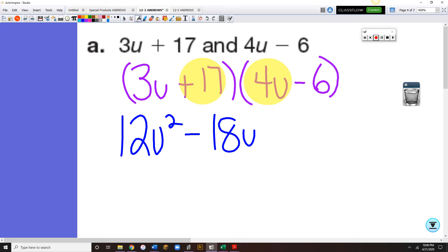Now I'm going to double distribute the 17. 17 times the 4u, 17 is plus, 4u is positive, so this is plus, and 17 times 4 is 68u, and a plus 17 times a minus 6 would be a minus 102.